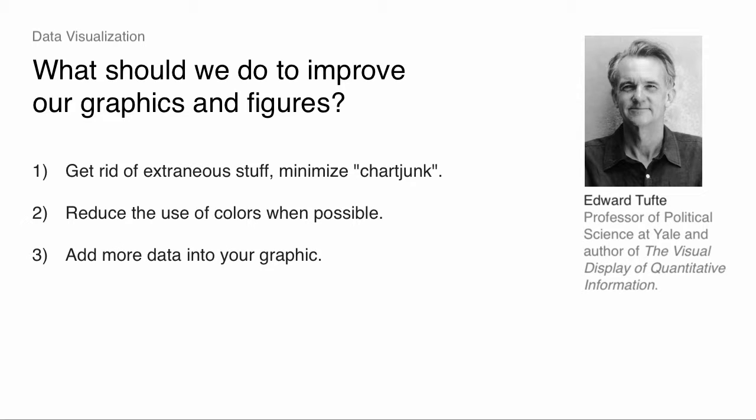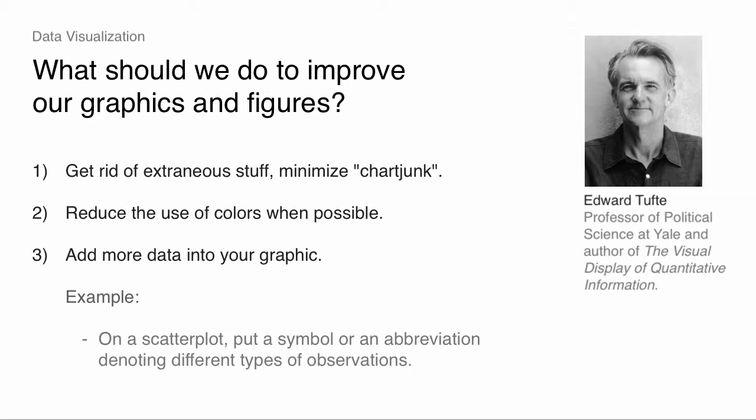Add more data into your graphic — make your graphic more data rich. Sometimes we have a scatter plot and we could easily put a symbol or an abbreviation denoting different types of observations, which adds richness to the figure. Sometimes people put country observations; sometimes you might be able to put symbols. Let's say you had 500 people of different ages or genders — you might incorporate that into the figure. If you abstract away from that, you'll still get the scatter plot you had before, but you might see some interesting patterns for subgroups. It's pretty easy to do and makes your graphic much more data rich.